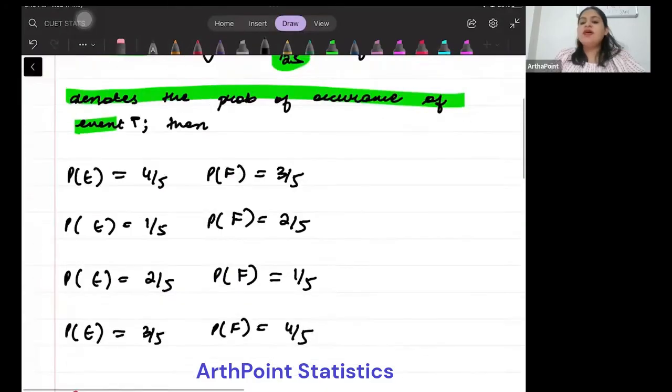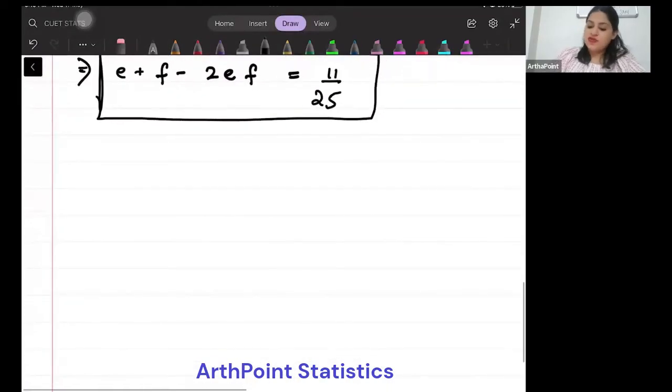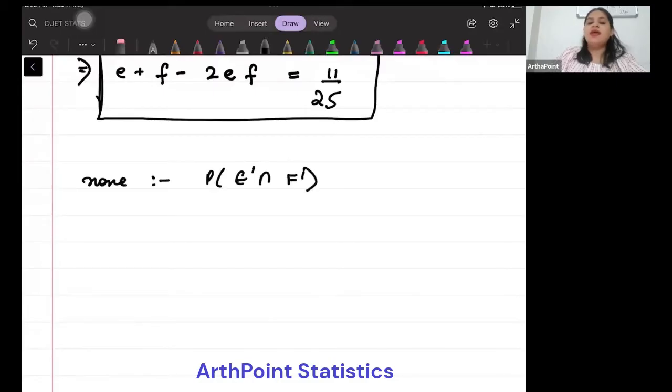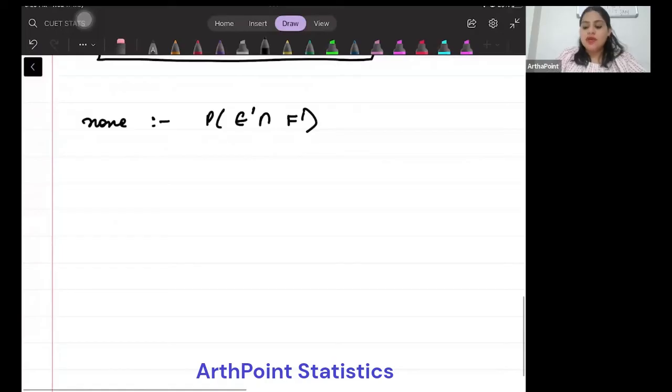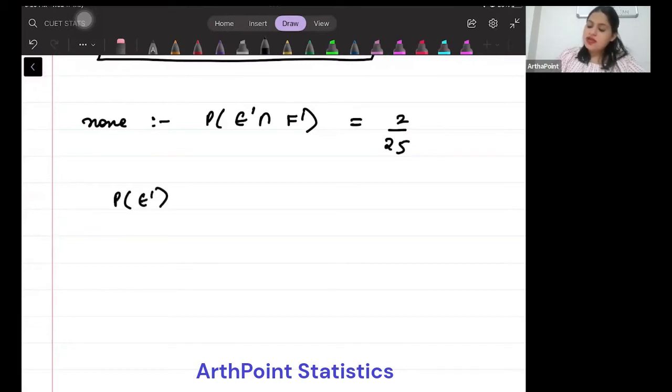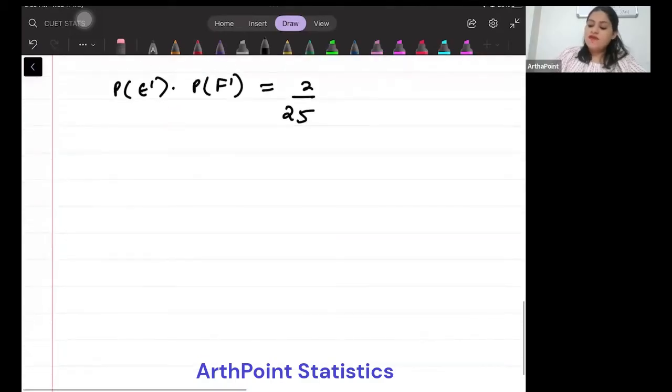Second, none of them occurring is 2 by 25. None means probability of E complement intersection F complement. Neither A nor B, none of them occurring. This is 2 by 25. But these are independent events, so this is one minus probability of E times one minus probability of F, which is 2 by 25.